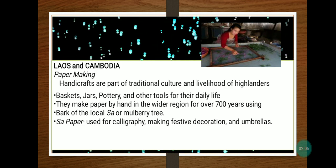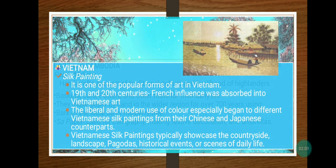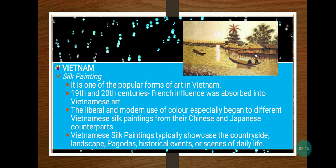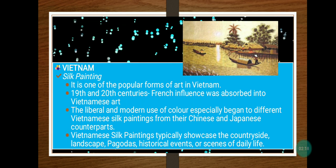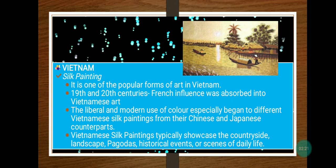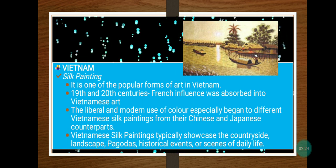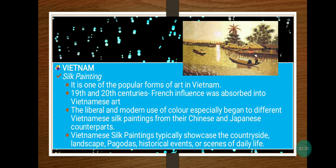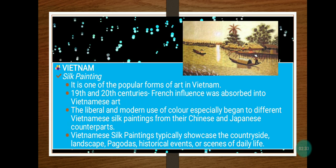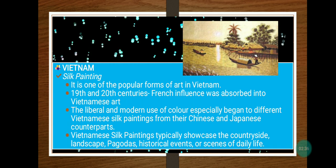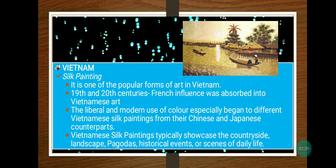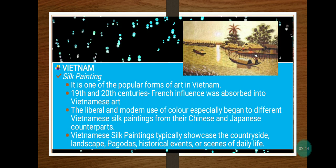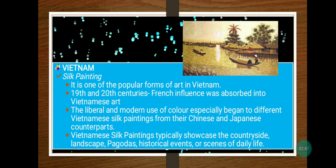The sa paper is used for calligraphy, making festival decorations, and umbrellas. In Vietnam, silk painting is one of the most popular forms of art. During the 19th and 20th century, French influence was absorbed into Vietnamese art, and the liberal and modern use of color distinguished Vietnamese silk paintings from their Chinese and Japanese counterparts. Vietnamese silk paintings typically depict the countryside, landscapes, pagodas, historical events, or scenes of daily life.